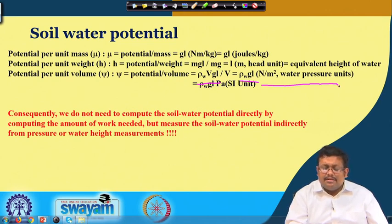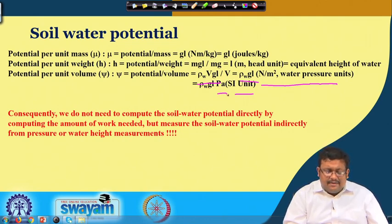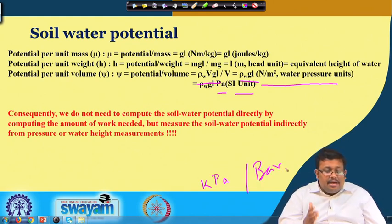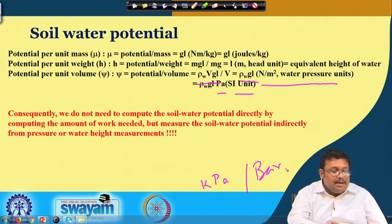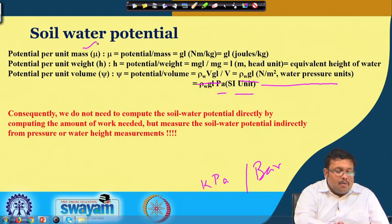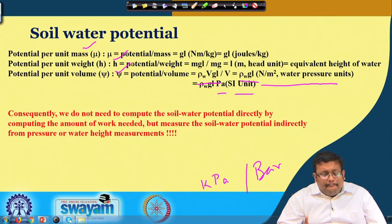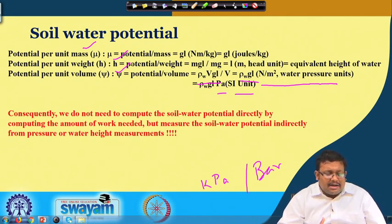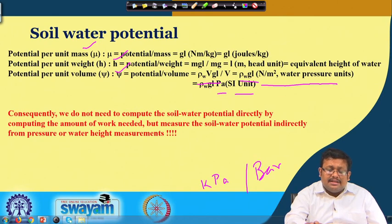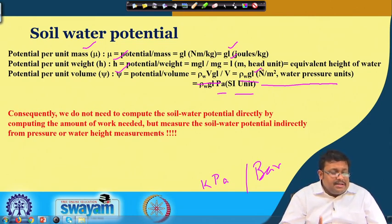The equivalent SI unit is called Pascal, denoted by Pa, and we generally denote soil water potential in terms of either kilo Pascal or bar. Comparing all three expressions — potential per unit mass, per unit weight, and per unit volume — we do not need to compute the soil water potential directly by computing the amount of work per unit. Instead, we can measure the soil water potential indirectly from pressure or water height measurements, since all expressions contain the L component.